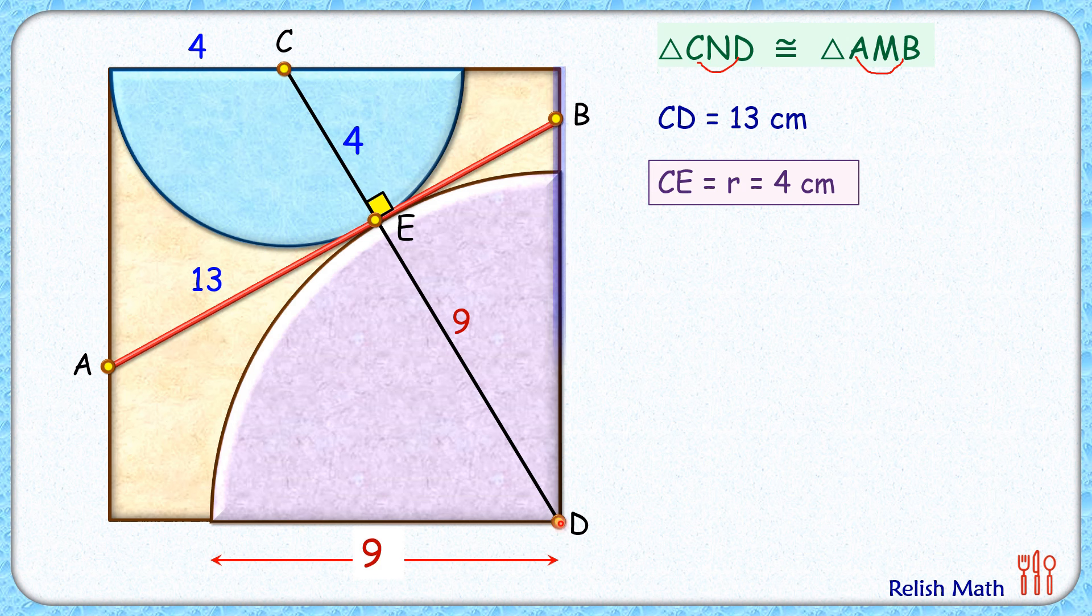Now let's find the area of the square. Let's assume the side length of the square is x centimeters. Now here this full length will be x, and this remaining length will be x minus 4, and this length is 13.